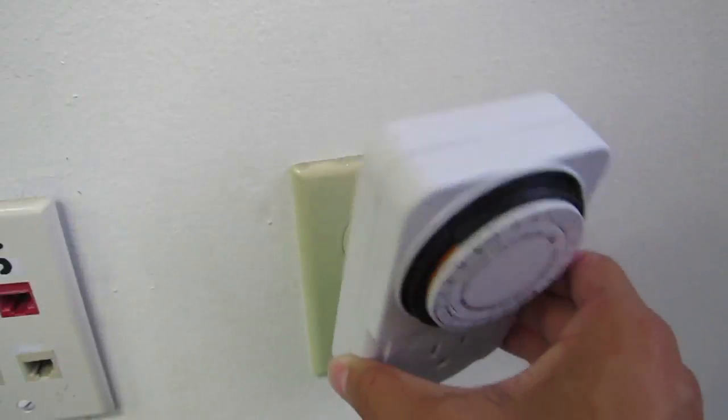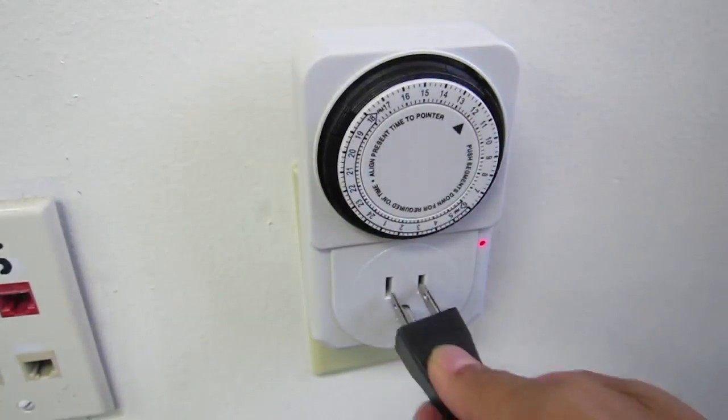Then switch the timer on, plug it in the wall, plug your ballast in, and you're set.